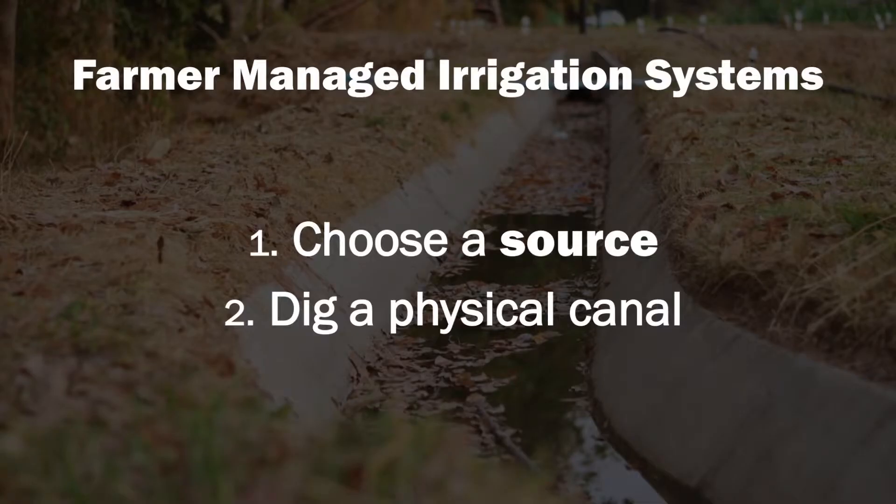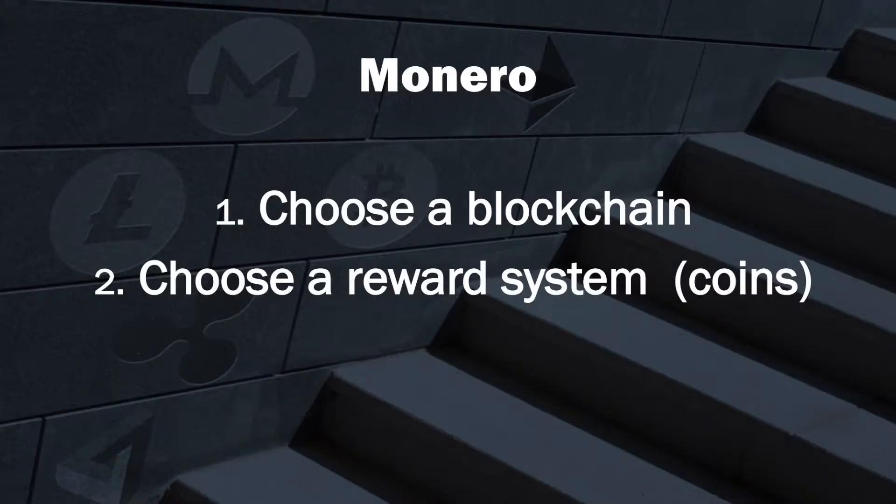So how are these two examples built? If you want to build a farmer-managed irrigation system, you find a water source and you dig a physical canal. If you want to create a cryptocurrency like Monero, you choose a blockchain — a way of storing that information — encrypt it, and it becomes a blockchain. You then choose a reward system, which is the currency. This is the reason that many people set up nodes that will keep copies, just like Bitcoin has a tradeable value.